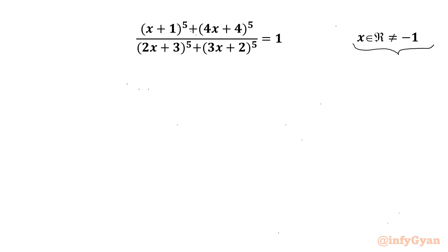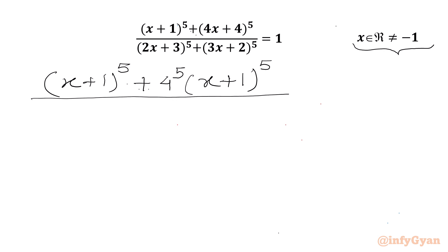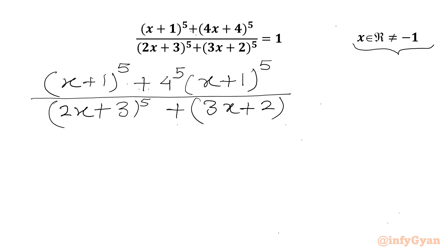So we will write our equation as (x+1) whole power 5 plus 4 is common, so it will come out as 4 power 5. In the bracket we will get (x+1)^5 over (2x+3)^5 plus 2, and (3x+2)^5 equal to 1.